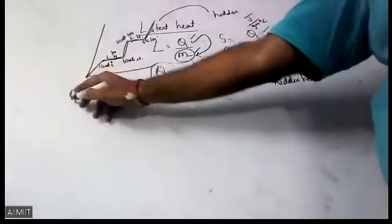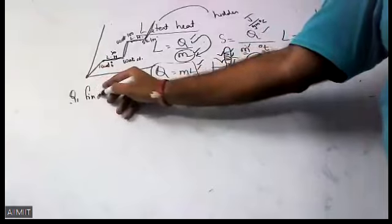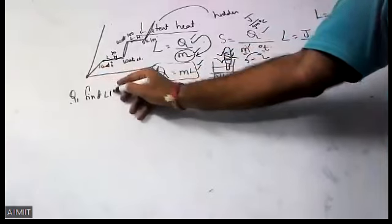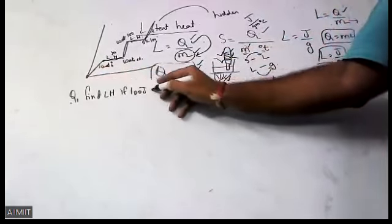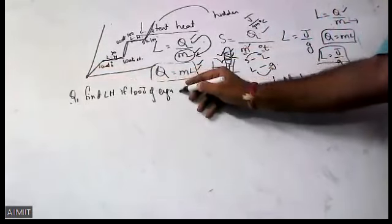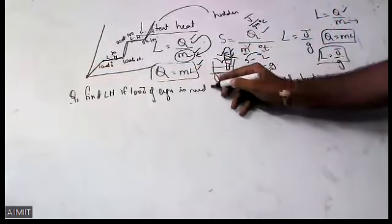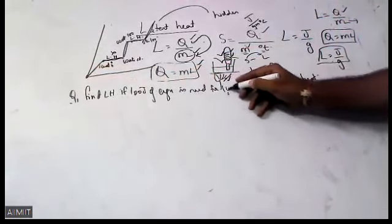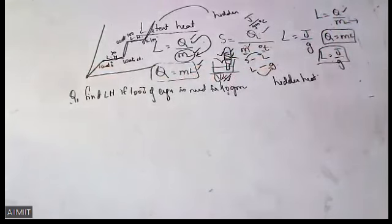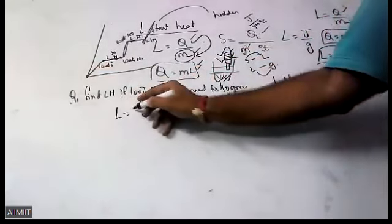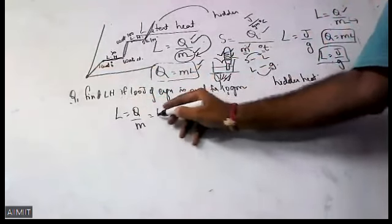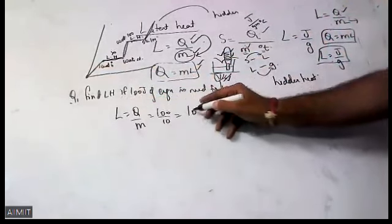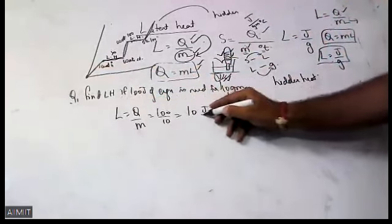One numerical: Find Latent Heat if 100 Joules of energy is needed for 10 grams of substance. The formula is L is equal to Q by M. So 100 divided by 10. The answer is 10 Joules per gram.